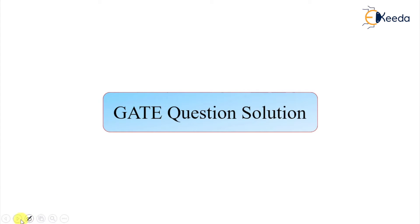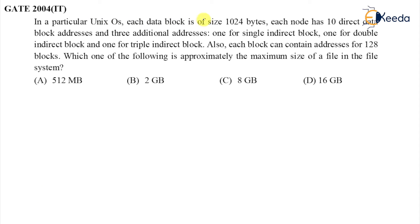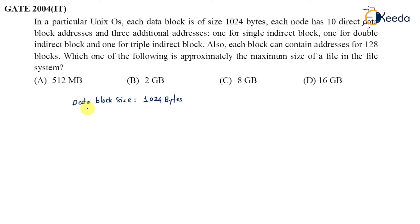We are talking about the inode structure. In a particular Unix OS, each data block size is 1024 bytes. Each inode has 10 direct pointers, that is, 10 direct block addresses.